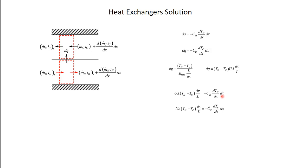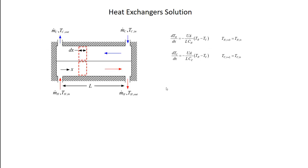Here's my ODE for the hot side and here's my ODE for the cold side. Canceling the DX's on both sides, I'm left with two coupled ordinary differential equations. They're both first order, so I need two boundary conditions: at X equals 0, the hot fluid temperature equals the hot inlet temperature; and at X equals L, the cold fluid temperature equals the cold inlet temperature. This is a well-posed math problem I can solve numerically any number of ways — but this one is simple enough to solve analytically.